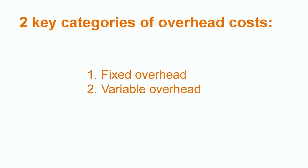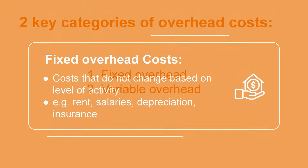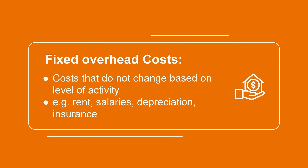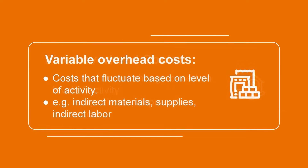In this video, we're going to be focusing on variable overhead variances. But what do we mean when we say variable? There are two key categories of overhead costs: fixed overhead and variable overhead. Fixed overhead costs don't change based on the level of activity. Examples of fixed overhead are things like rent, salaries, depreciation, and insurance. Variable overhead, on the other hand, are costs that fluctuate based on the level of activity.